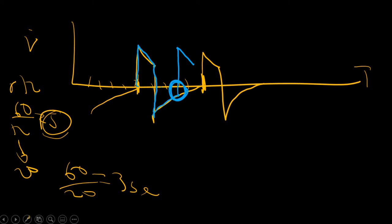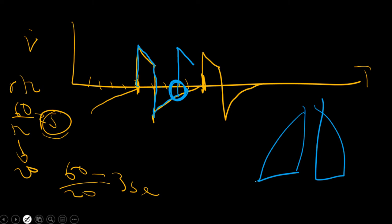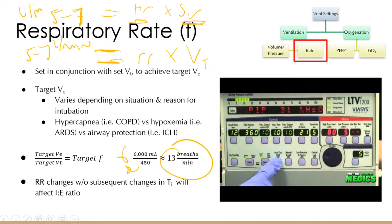Air trapping over time causes dynamic hyperinflation. That's why COPD patients with really bad lungs on chest X-ray start to flatten out their diaphragm — they can't exhale fully before their next breath. So when making respiratory rate adjustments, if you're increasing rate from 12 to 25 because the patient is acidotic, make sure inspiratory time is also decreased, or else you'll start to get that air trapping.